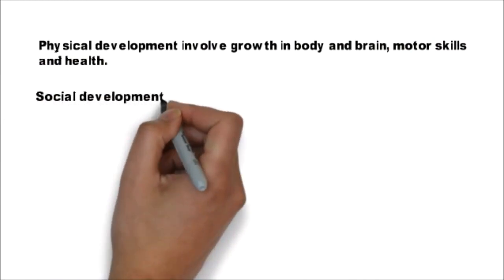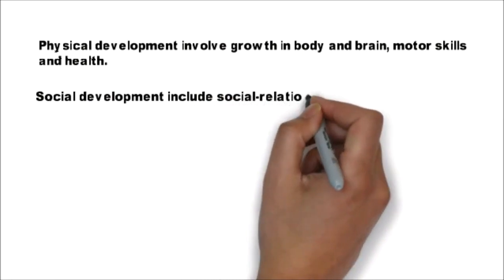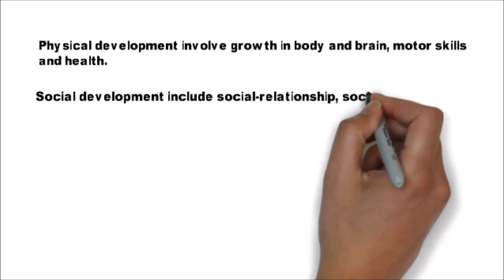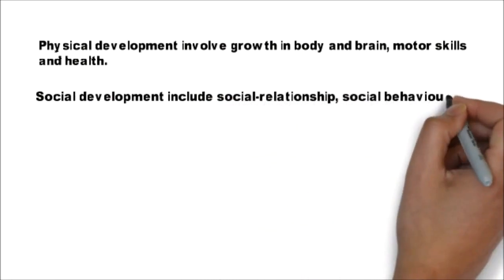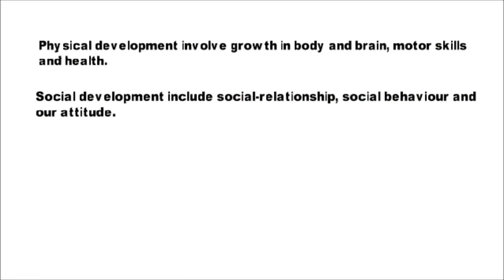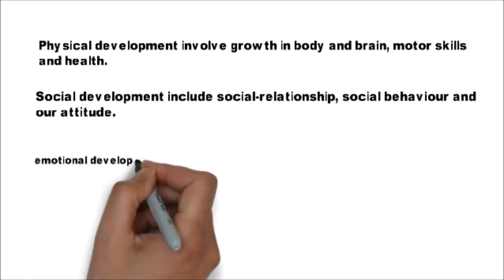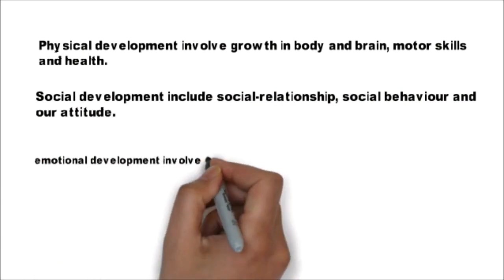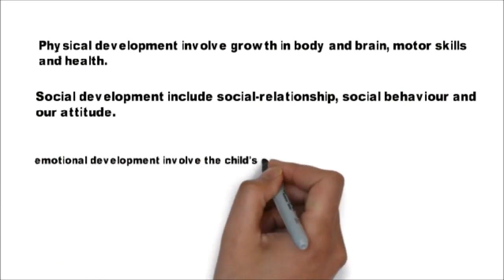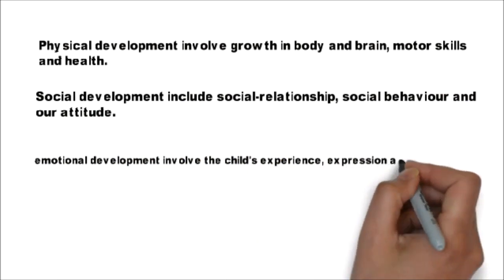Social development includes social relationships, social behavior, and our attitude. Emotional development involves the child's experience, expression, and management of emotions.